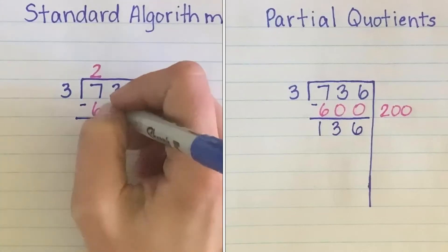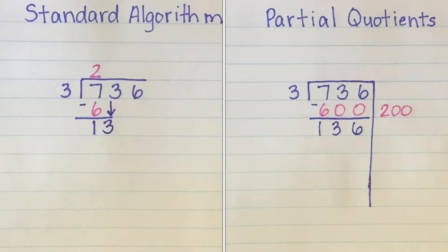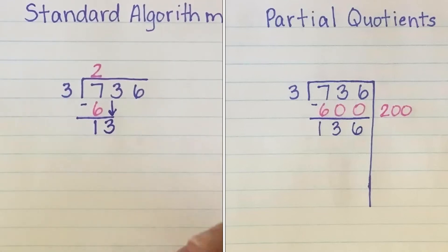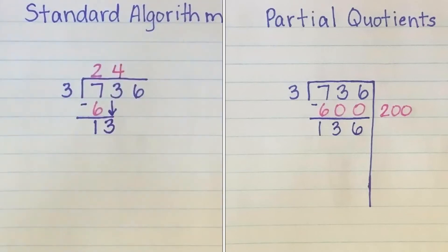The standard algorithm tells us to bring down the next number in the dividend, which is essentially making another dividend to divide from. Now we need to find how many groups of 3 can be taken from 13 without going over. Using my math facts, I know that 4 groups of 3 is the largest value I can take from 13.